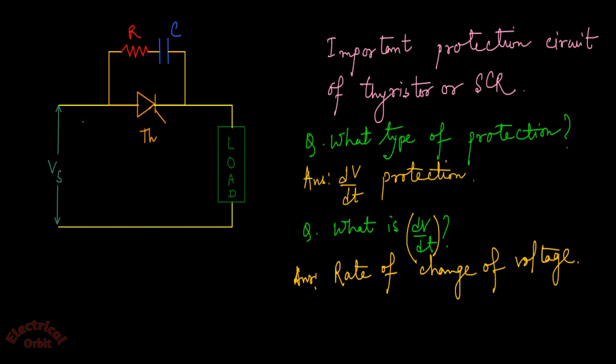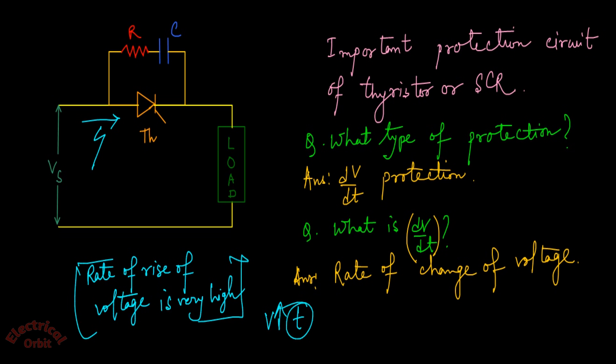Now if an overvoltage appears across the SCR and the rate of rise of voltage is very high, what does it mean? It means voltage is increasing at very high speed with respect to time—that means an overvoltage surge appears across the SCR.